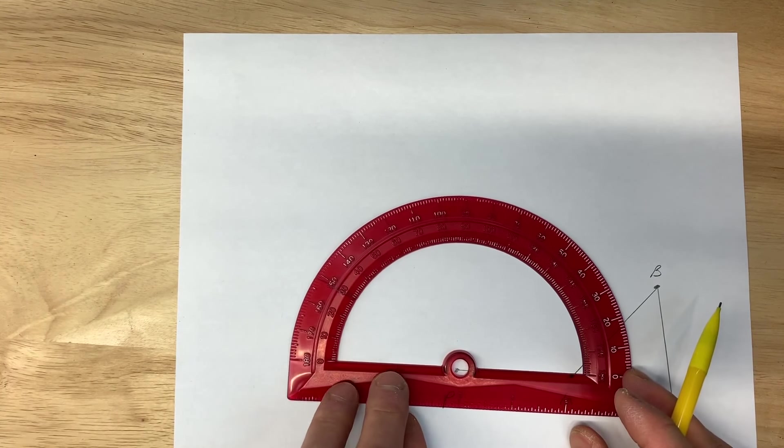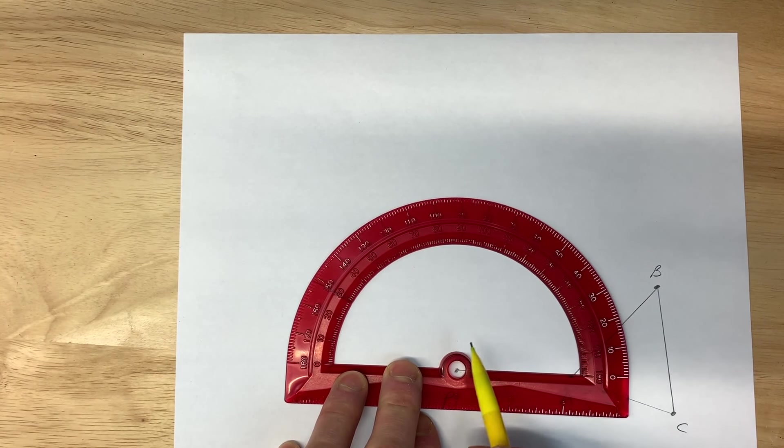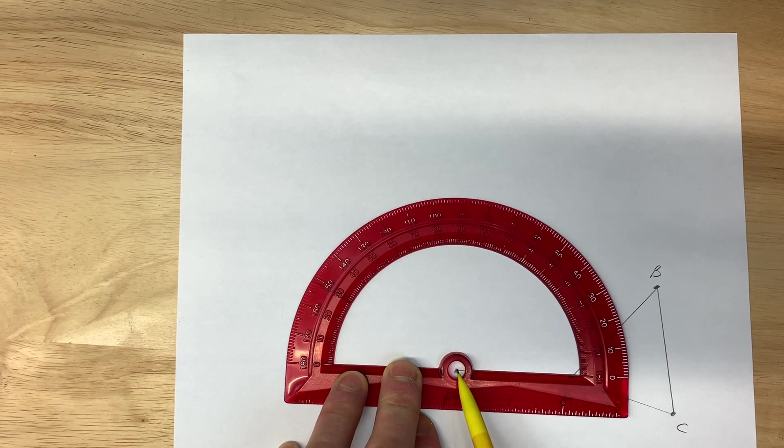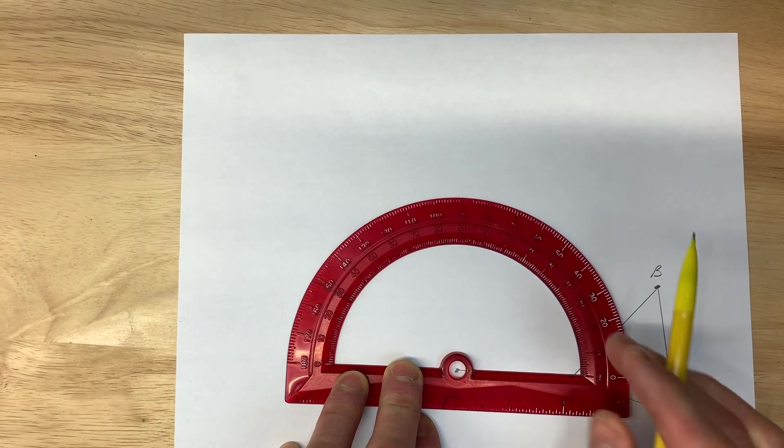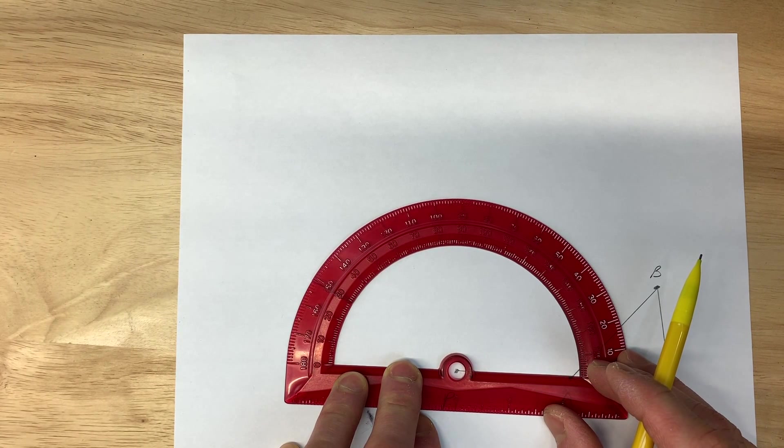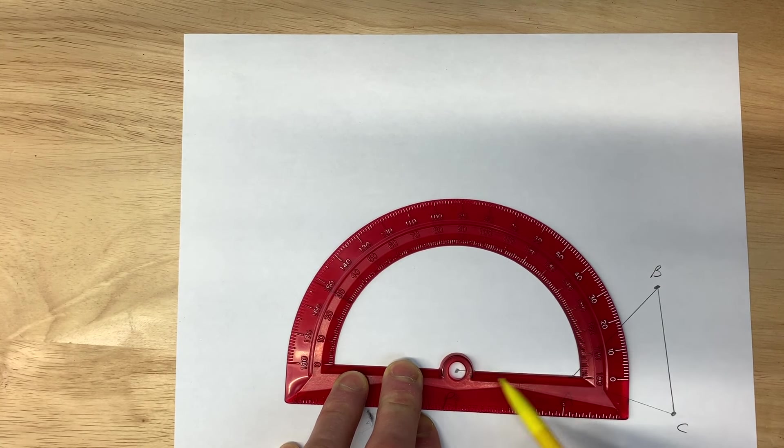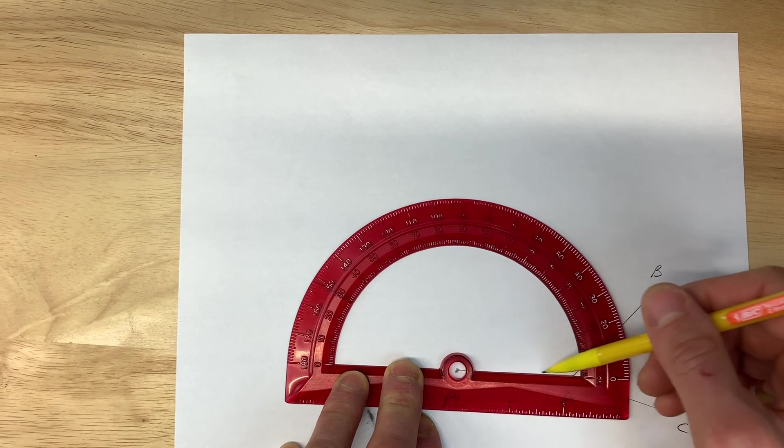Then you want to position your protractor so that point P here is right at the center of your protractor - that's the point you're rotating about. You also want to make sure that this line here between point P and point A is along this edge.